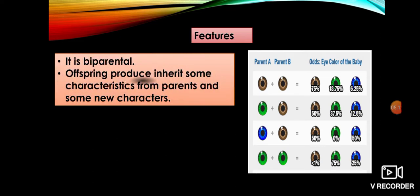Some features of sexual reproduction: it is bi-parental, meaning two parents are involved. The offspring inherits some characteristics from both parents — some from the female, some from the male — and some new characters emerge from the combination, for example eye color and hair color. The second feature is fusion of gametes.